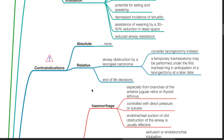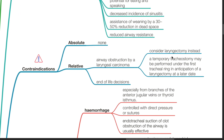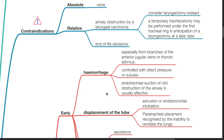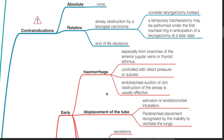No absolute contraindications exist. Relative contraindications include airway obstruction by a laryngeal carcinoma — consider laryngectomy instead. A temporary tracheostomy may be performed under the first tracheal ring in anticipation of a laryngectomy at a later date. End-of-life decisions may also contraindicate tracheostomy.